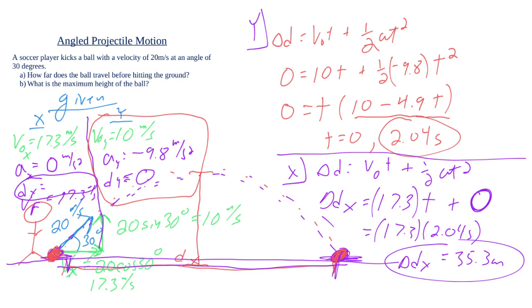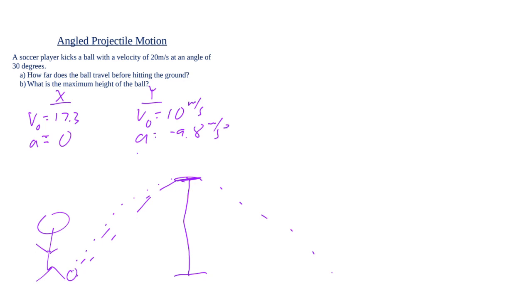Let's go ahead and clean this up and do the second part of the problem. Part B of this problem, we are looking for the maximum height. So the ball goes up and it does come back down, but we don't really care about that second part. We just care about how high does it reach. When we do our givens for this one, the x values are pretty much the same. We still have an initial velocity of 17.3, an acceleration of zero. Now the time's not the same because we're looking for the time just up to the peak. In the y direction, our initial velocity is still 10, and acceleration is still negative 9.8. Our height is obviously not zero because we're not back on the ground.